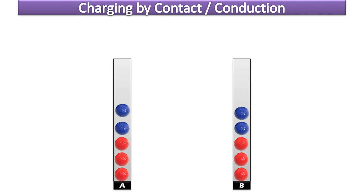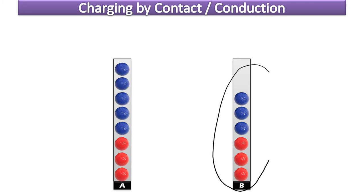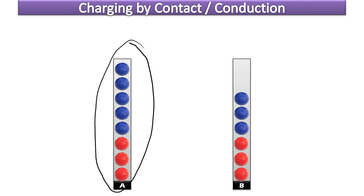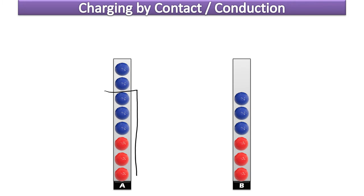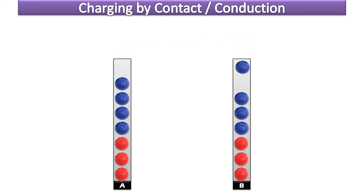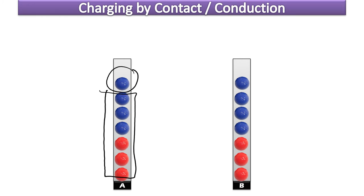Can you make something negative? Yes. If you have a neutral object and bring it into contact with something that has a negative charge — say negative 2 — one electron gets transferred and the neutral object becomes negatively charged. The original object was negatively charged, still is, just not as negative as before. So charging by contact leaves both objects either positive or both negative, and you can only transfer in equal increments of one electron.